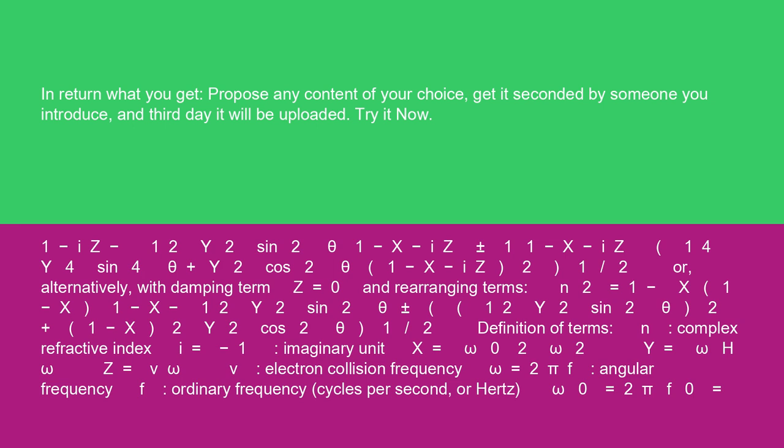Or, alternatively, with damping term z = 0 and rearranging terms: n² = (1 - x)(1 - x) / ((1 - x) - (1/2)y² sin²θ ± [((1/2)y² sin²θ)² + (1 - x)² y² cos²θ]^(1/2)). Definition of terms: